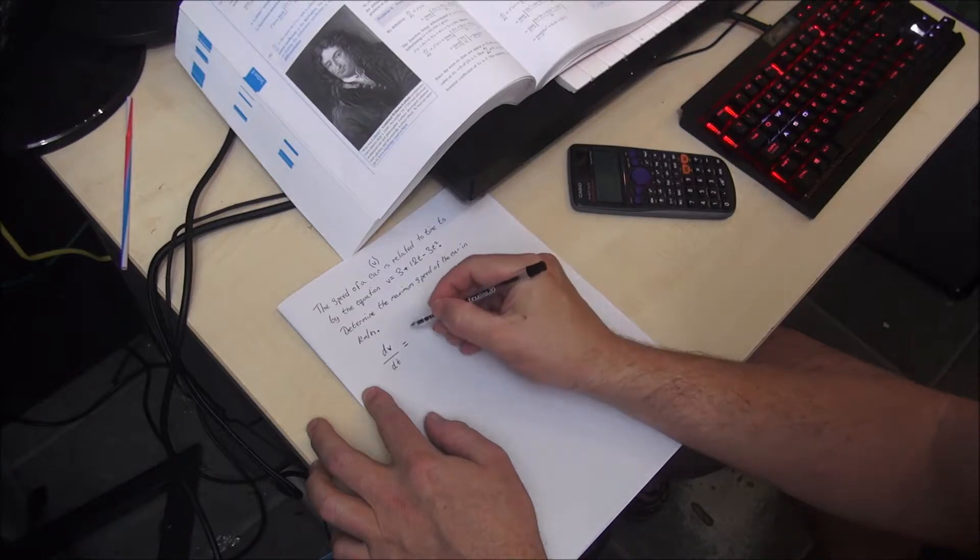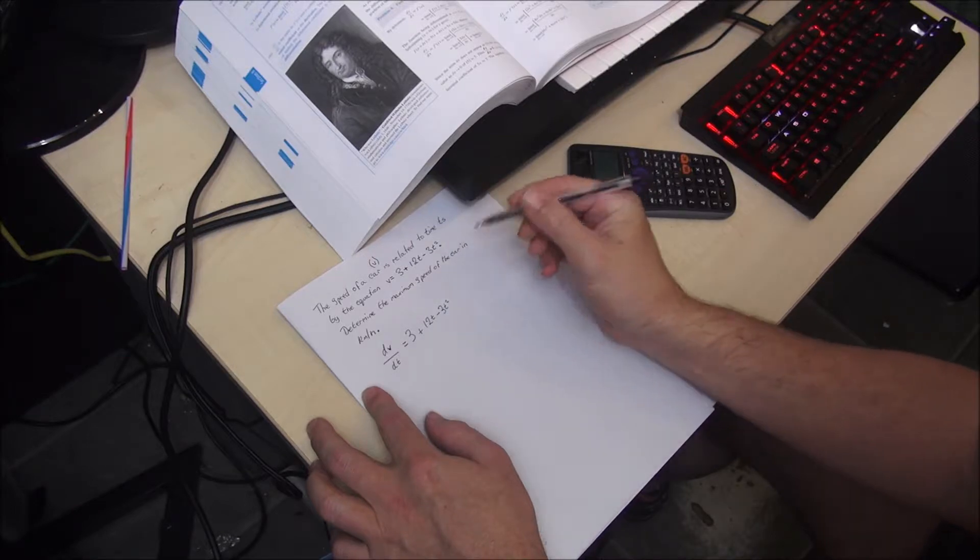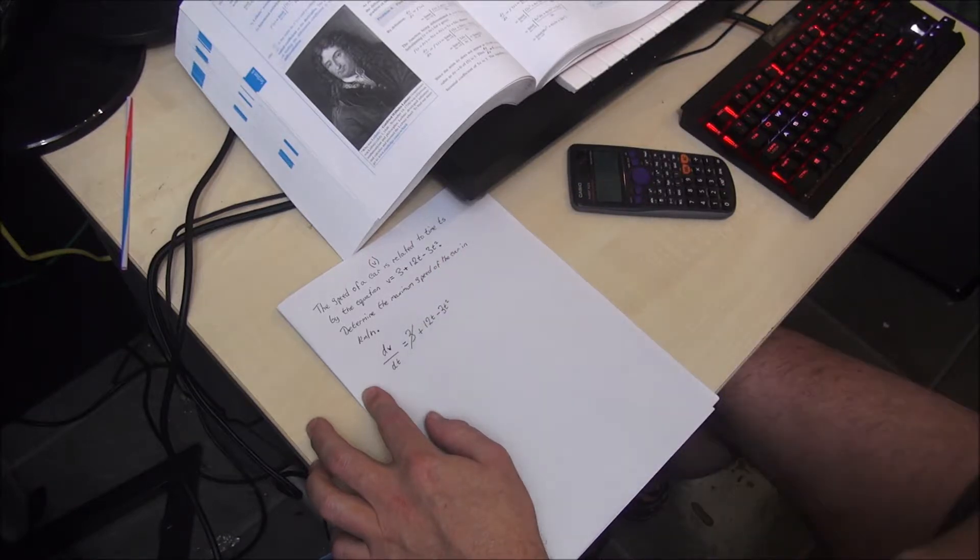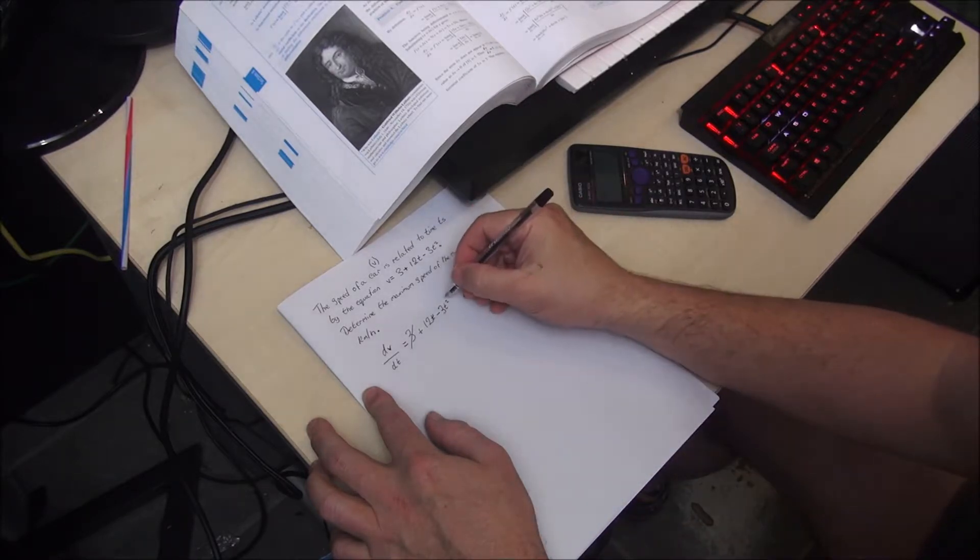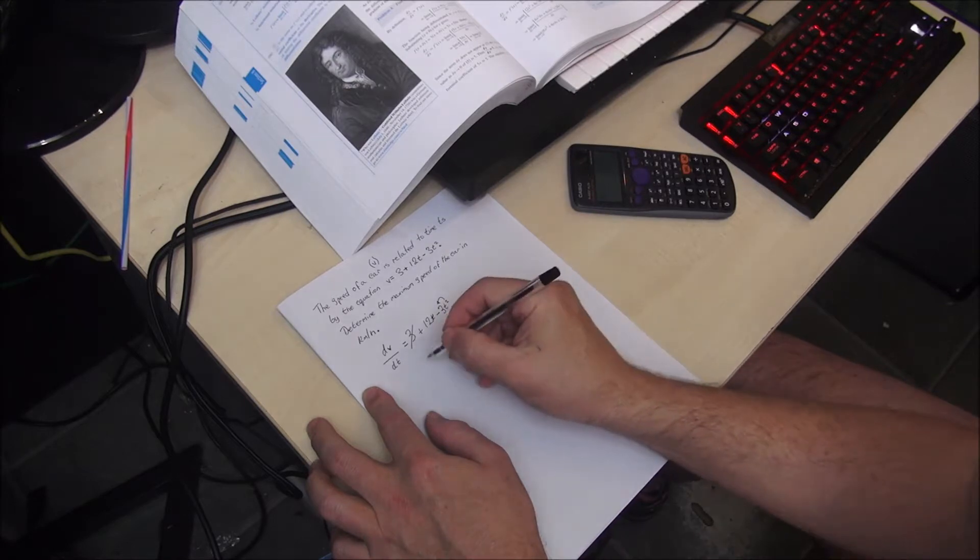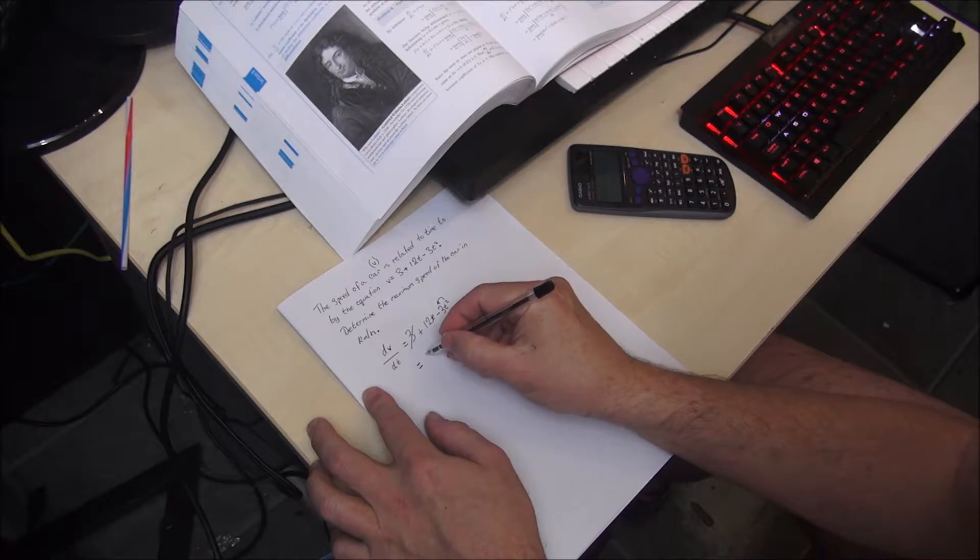So I'll write it out. We have 3 plus 12t minus 3t squared. And when we differentiate, the 3 disappears, the t disappears, and the square multiplies the coefficient. So we're left with 12 minus 6t.